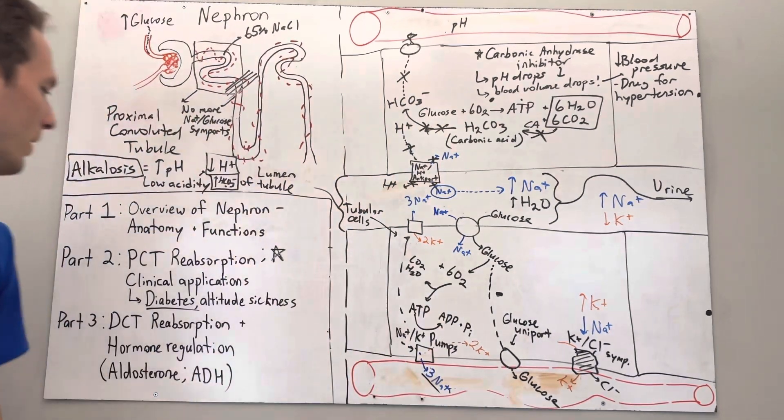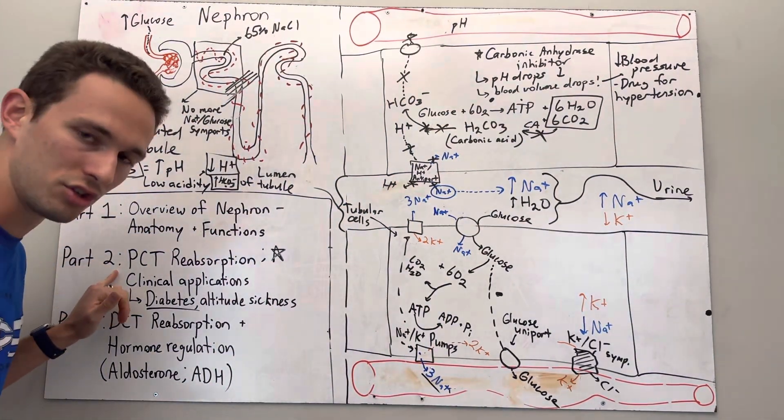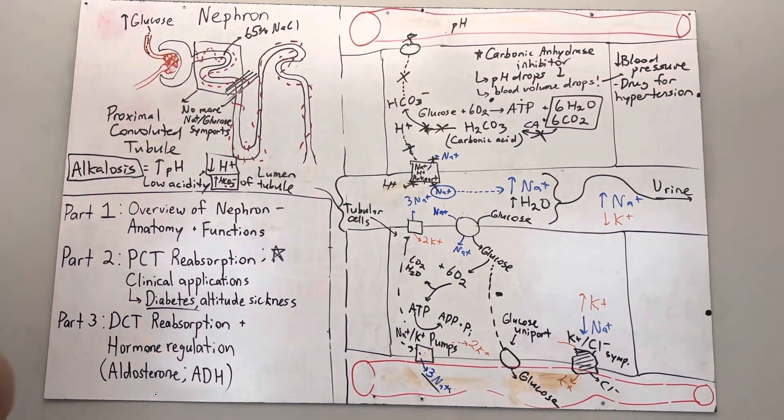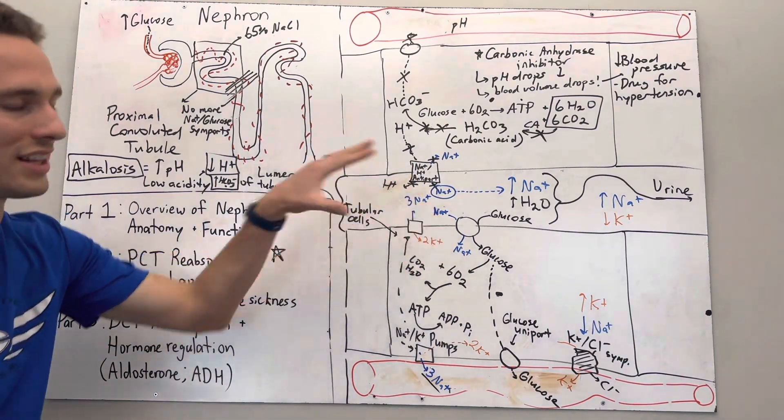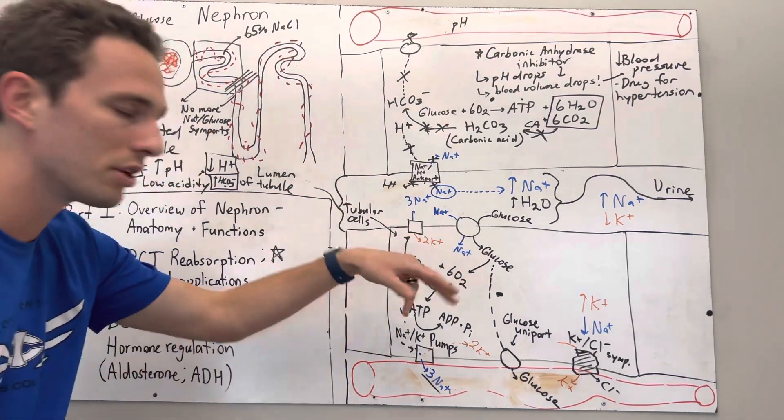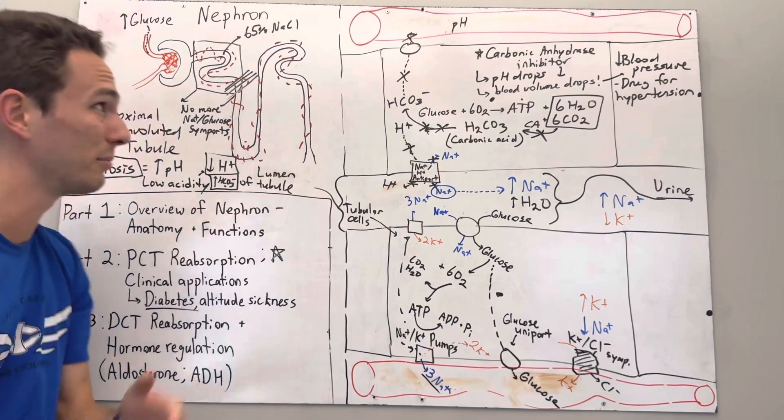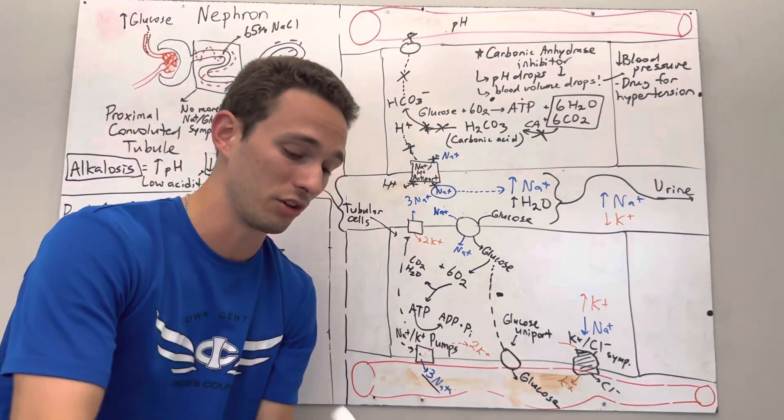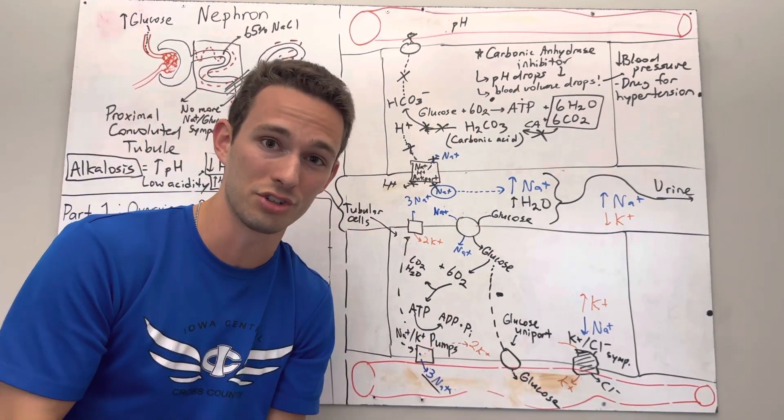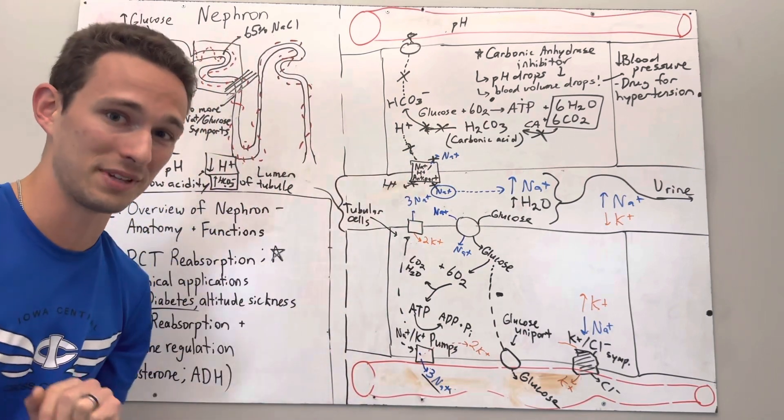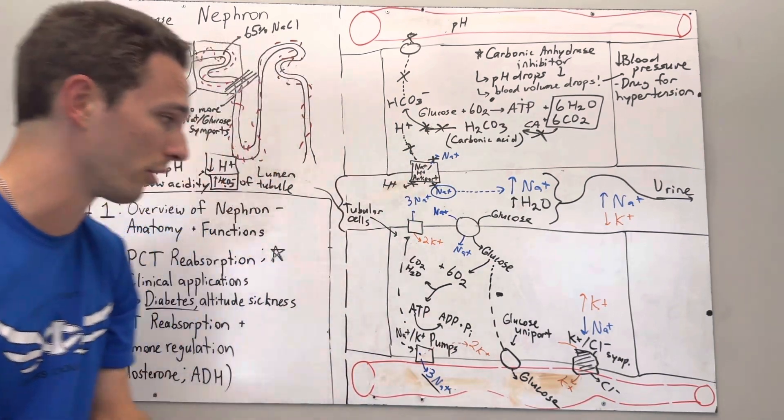So once again, just to recap, we went through the proximal convoluted tubule, the first part of that nephron. We talked about how it reabsorbs a lot of different solutes, things like glucose, amino acids. In fact, I believe something like 80% of like glucose, amino acids, and other beneficial solutes are reabsorbed at the PCT. So that's really important.